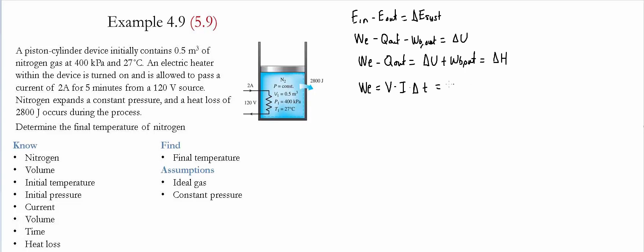That gives us 120 volts, 2 amps, 5 minutes, then we convert this into seconds: one minute has 60 seconds, and we do the conversion between volts, amps, and kilojoules. We find that one kilojoule per second equals 1000 volts times amps.